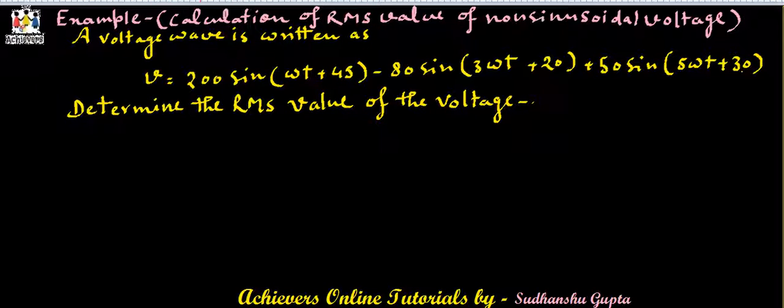In this problem, we can clearly see that the value of V1m is equal to 200 volts. The value of V2m is minus 80 volts.